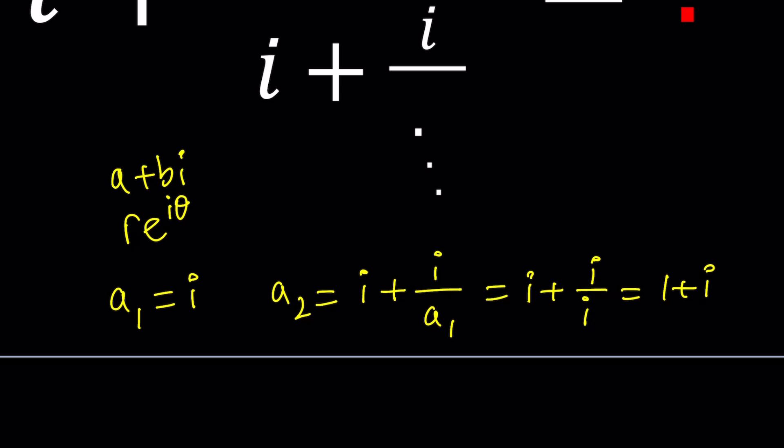So we kind of have a sequence that starts with i and then continues with one plus i. a sub 3 is going to be i plus i over a sub 2, which is i plus i over one plus i. Now to simplify this expression, we can multiply by the conjugate or we can first make a common denominator. It doesn't matter. It's the same thing pretty much.